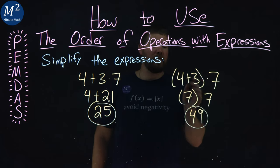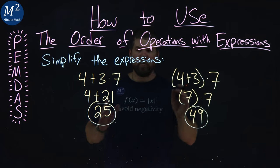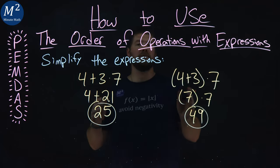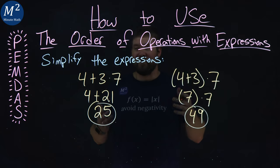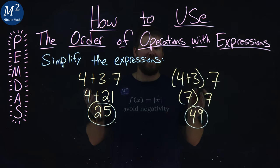So 4 plus 3 in parentheses times 7 is 49, and hopefully you can see how these two expressions will differ in their final solution, where they simplify to.